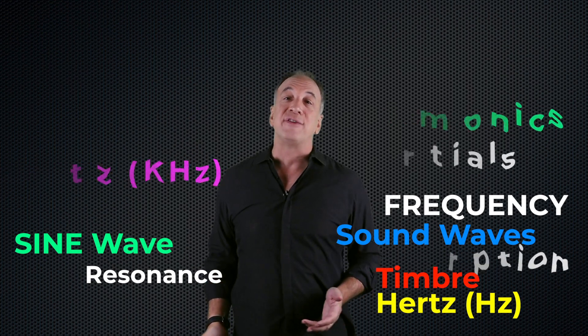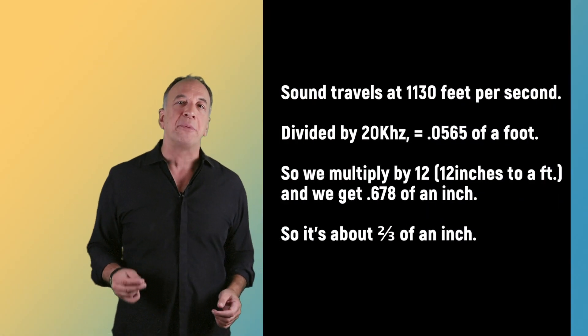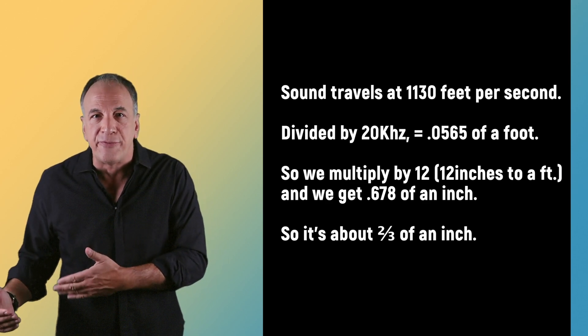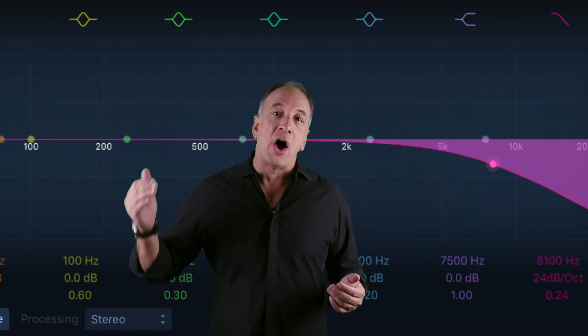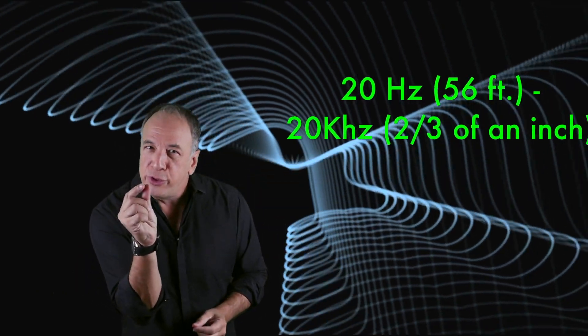That's a lot — bet you didn't realize we covered so much. So how big is that 20 kilohertz waveform? Sound travels at 1130 feet per second, divided by 20 kilohertz — 20,000 cycles per second — equals .565 of a foot. Multiply by 12 inches to a foot and we get .678 of an inch. So it's only about two thirds of an inch. And you have to be young with great hearing in order to hear that — most people can't hear all the way up to 20 kilohertz. As we age, higher frequency hearing starts to roll off. As the waves get smaller, pitch gets higher. Dogs and other animals can hear it, but not us humans. So as humans, we can hear waves from 56 feet long to two thirds of an inch.